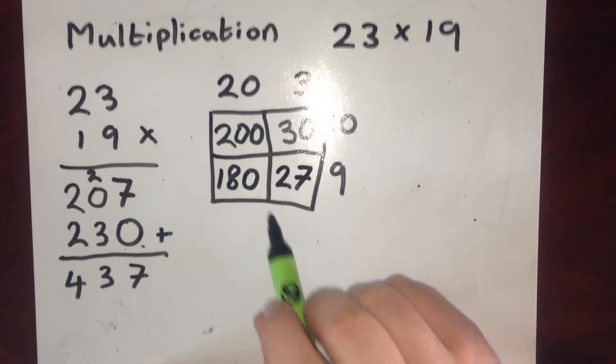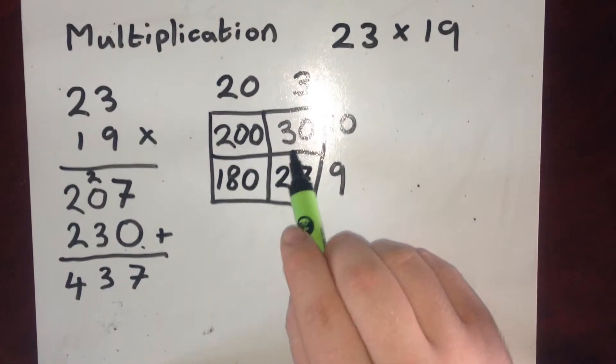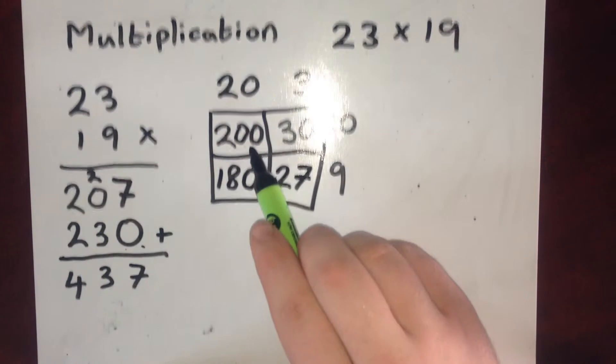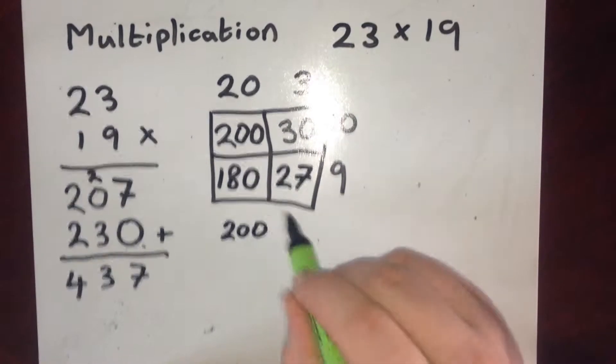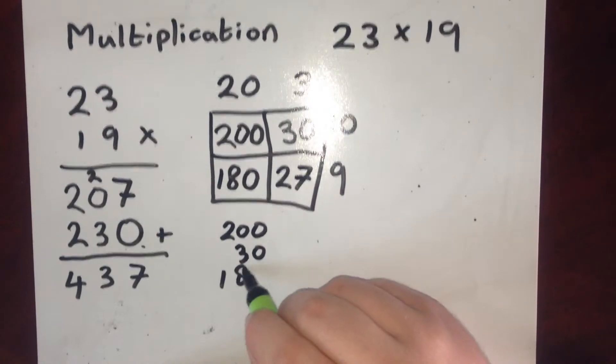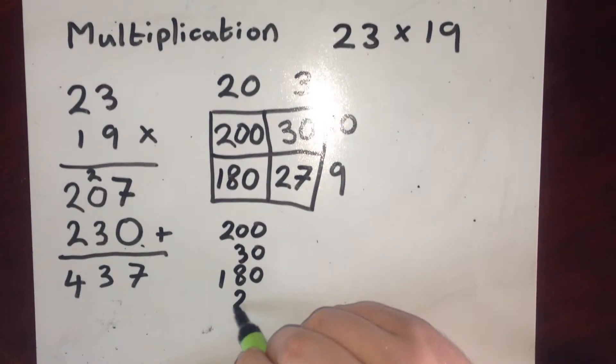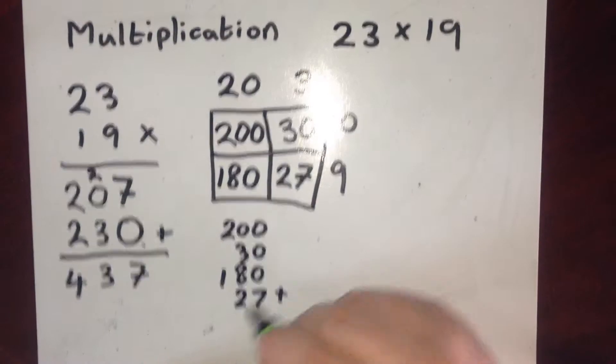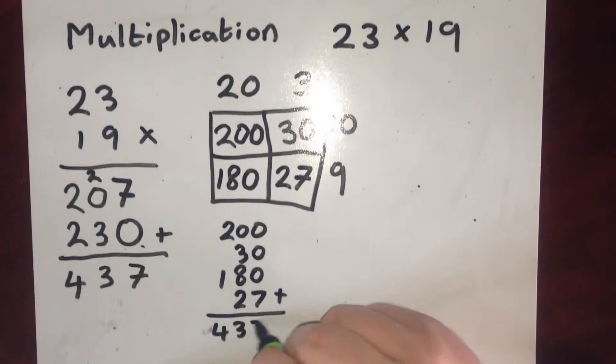To get my final answer, I just need to add up all the values in each of these boxes. So 200 plus 30 plus 180 plus 27. And that will give us our 437.